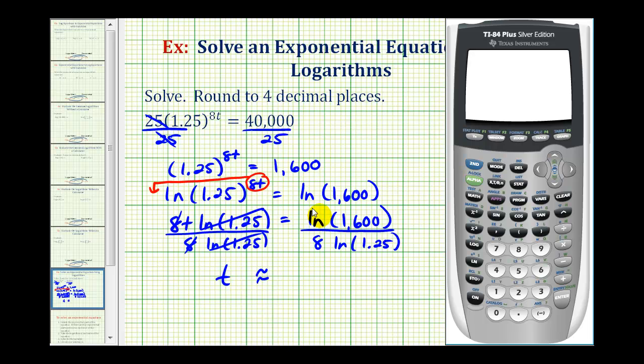So I'll put the numerator in a set of parentheses as well as a denominator. So the numerator is going to be natural log 1,600. This parenthesis is for the natural log. This parenthesis is for the numerator. Divided by 8 natural log 1.25. Again, one parenthesis for the natural log, and one for the denominator.